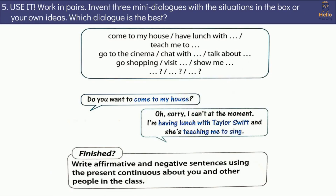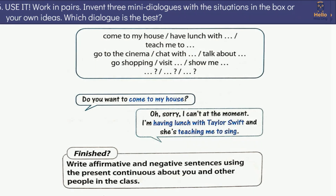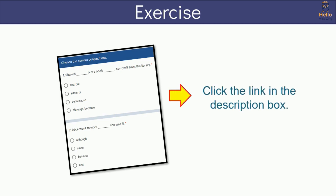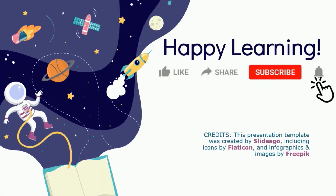Exercise 5: Work in pairs. Invent 3 mini dialogues with the situations in the box, or your own ideas. Which dialogue is the best? That is the end of the lesson. To practise more on present continuous, you may click the link in the description box. Do like and subscribe to see more lessons like this. Happy learning!